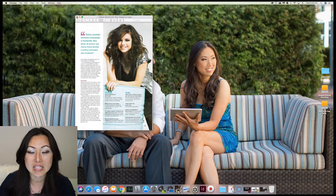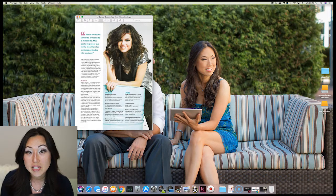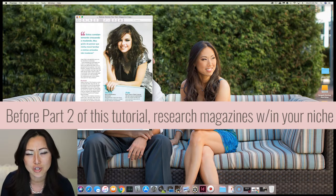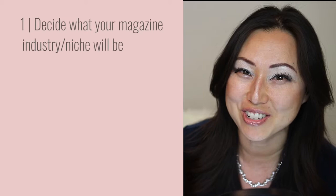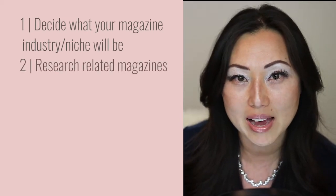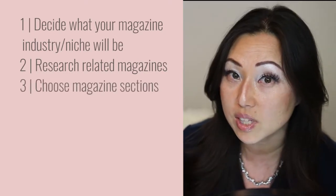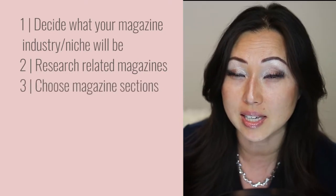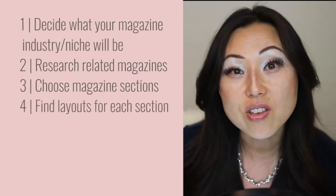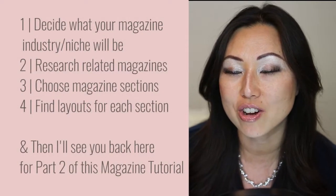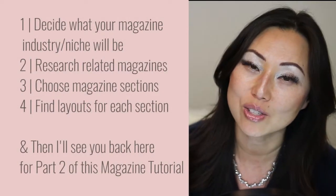Your first assignment is simply to go out and look at magazines within your niche, your industry. Let me recap. The first thing you need to do is decide what industry you're in. The second thing is to start researching magazines. The third thing is to start creating sections and themes you want inside your magazine — the major table of contents areas. And the fourth thing is finding layouts to fit within each of those themes. Once you do that, I'll see you back here for part two and we'll start talking about creating actual layouts for different pages.